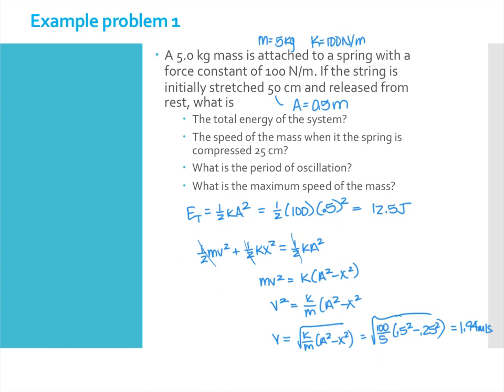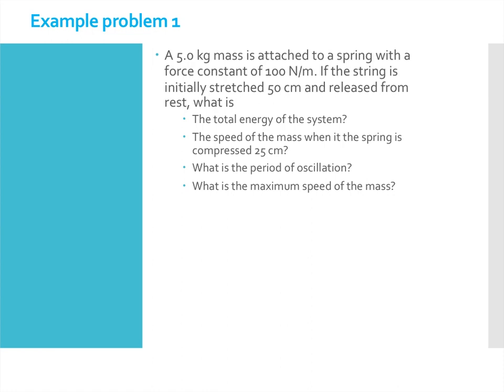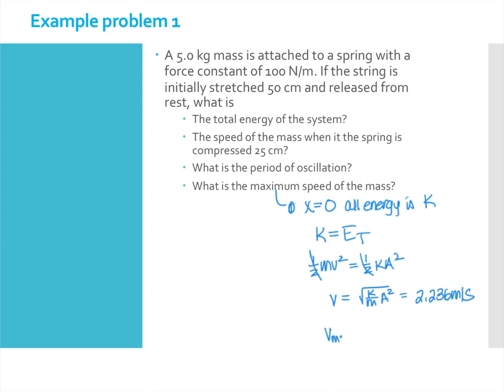In order to figure out the maximum speed, the maximum speed will occur when x is equal to 0, because all the energy is kinetic. So we want to set KE equal to E total, so one-half mv squared is equal to one-half kA squared. V is going to be the square root of k over m times A squared, and that turns out to be 2.236 meters per second. It's bigger than the speed I found in the last one, which makes me think that that's correct. Notice I could have also found v max as omega times A. That was from one of the previous expressions we used. So either way, I can use energy, or I can use this. I should get the same answer.